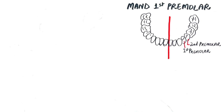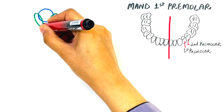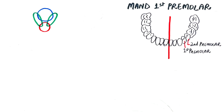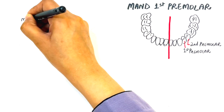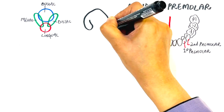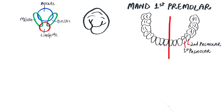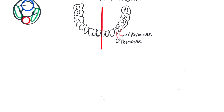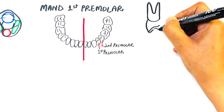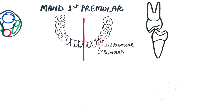The mandibular first premolar develops from four developmental lobes: the buccal, mesial, distal, and lingual lobes. The buccal lobe forms the large buccal cusp, the lingual lobe forms the small and poorly developed lingual cusp, and the mesial and distal lobes form the mesial and distal marginal ridges respectively. The buccal cusp is the only cusp that comes in occlusion with the maxillary premolar, hence it is referred to as a functional cusp.